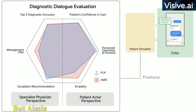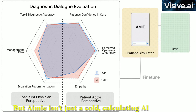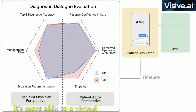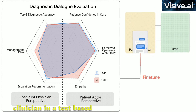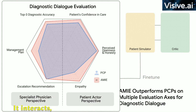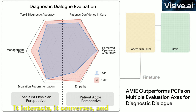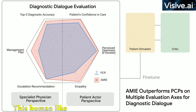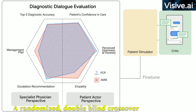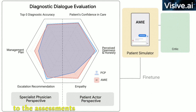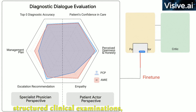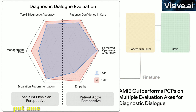AMIE isn't just a cold, calculating AI system — it's more akin to a virtual clinician in a text-based setting. It interacts, converses, and learns, much like a human clinician would. This human-like interaction is what sets AMIE apart from other AI systems. A randomised, double-blind, crossover study, similar to the assessments clinicians undergo in objective structured clinical examinations, was set up to put AMIE to the test.